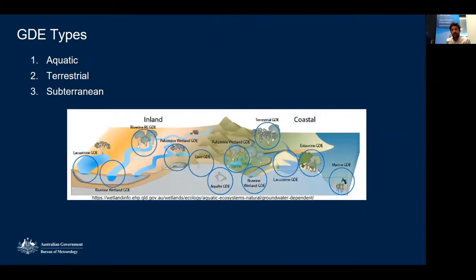There are a few different types of GDEs on the Atlas, broadly classified into three groups: aquatic, terrestrial, and subterranean. A figure from the Queensland Government website shows the different GDE habitats — lakes, rivers, caves, and wetlands — which I'll go through in more detail.